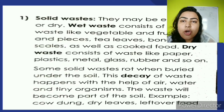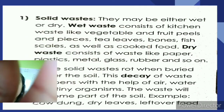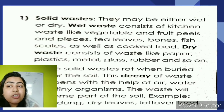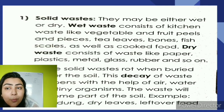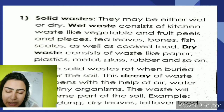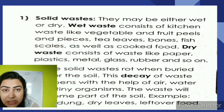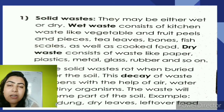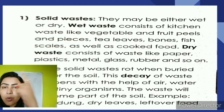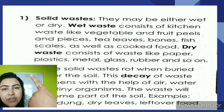What is solid waste? Solid waste may be either wet or dry. Wet waste consists of kitchen waste like vegetable and fruit peels and pieces, tea leaves, bones, fish scales, as well as cooked food. Basically, wet waste is the waste that we get from the kitchen — leftover food, vegetable skins, vegetable peels, and so on. All of those are wet solid waste.